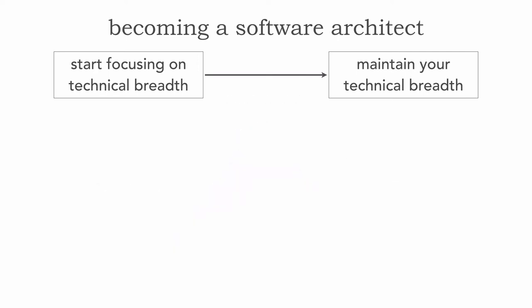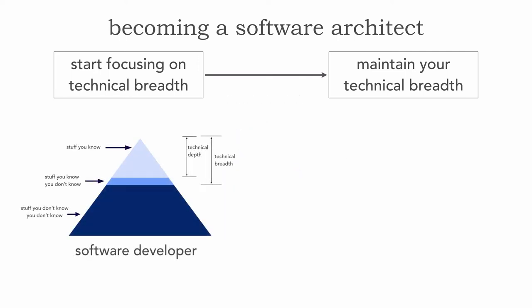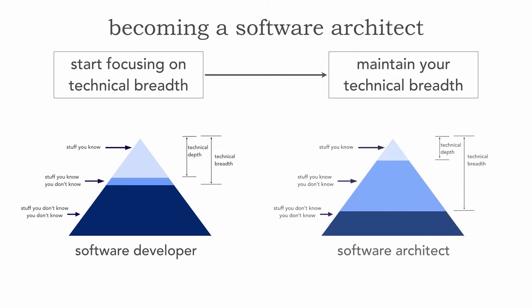To summarize: if we look at the typical knowledge triangle of a software developer, the focus is really on technical depth, and technical depth and breadth are pretty close together. But as we saw in that transition, the software architect has a much different knowledge triangle. We tend to know less about a lot more, as opposed to knowing a lot about fewer things. So notice that technical breadth is what we really focus on as a software architect. Throughout your career, you can really chart what your knowledge triangle looks like and balance it appropriately to become either an effective software developer or an effective software architect.